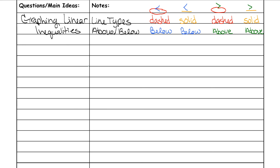Here's an actual example of an inequality. The first thing you want to determine is: will it be a solid or dashed line, and will you shade above or below? This one is less than or equal to. Less than means you're shading below, and equal to means it actually does touch the line — so you're going to have a solid line.